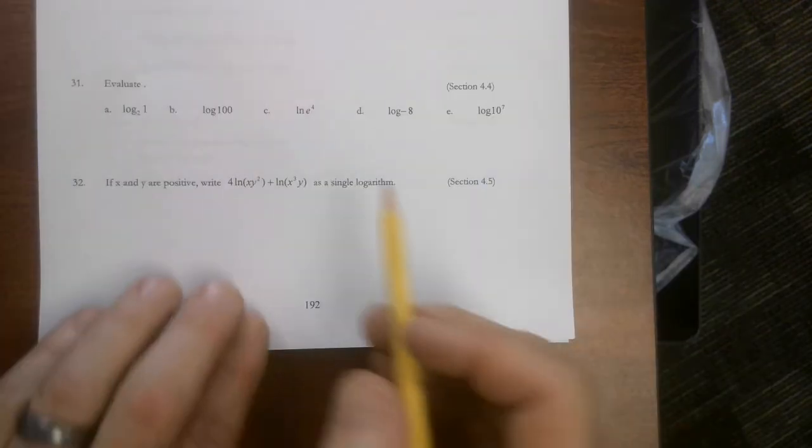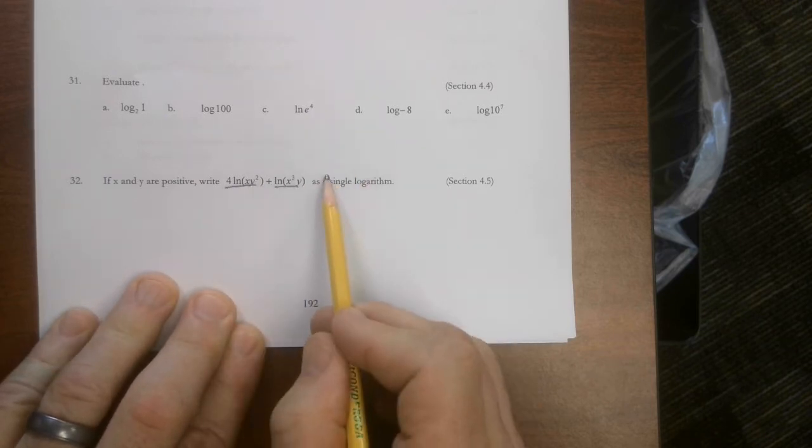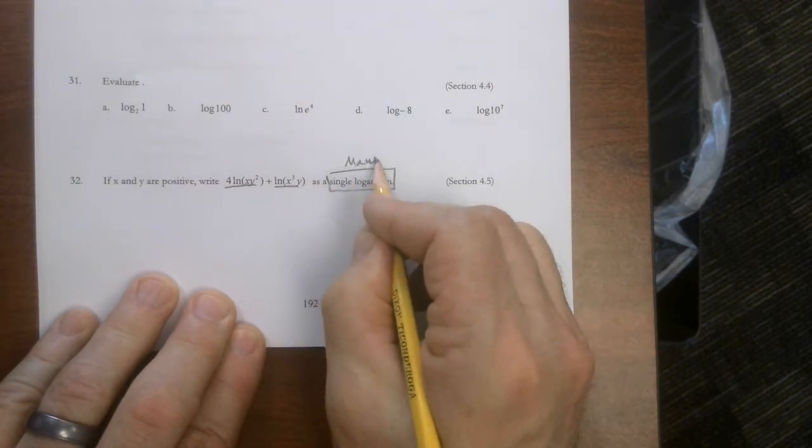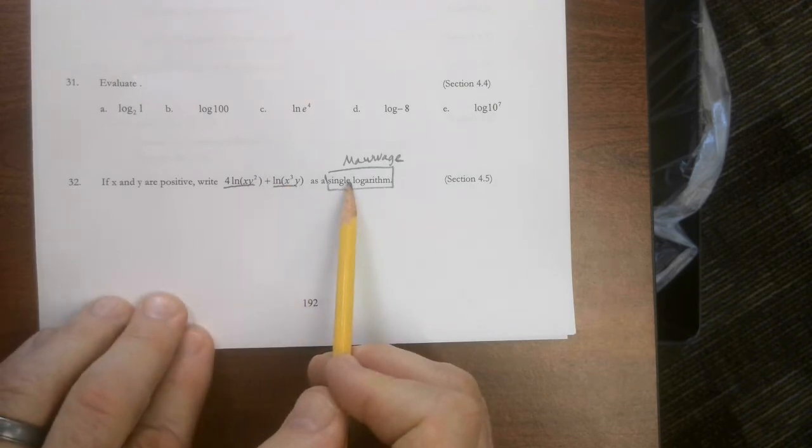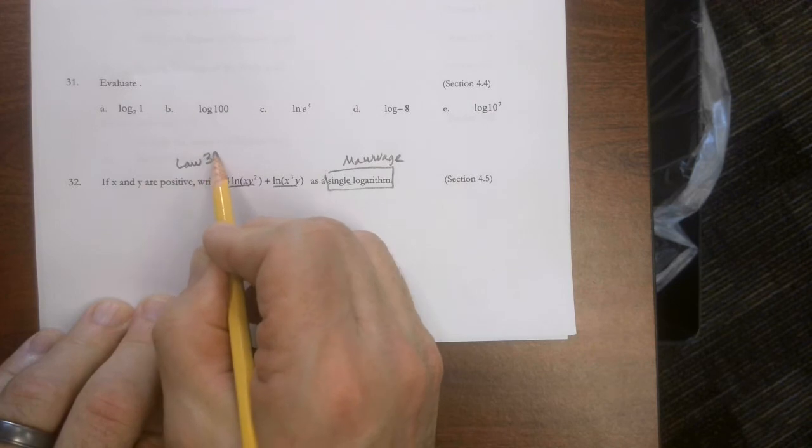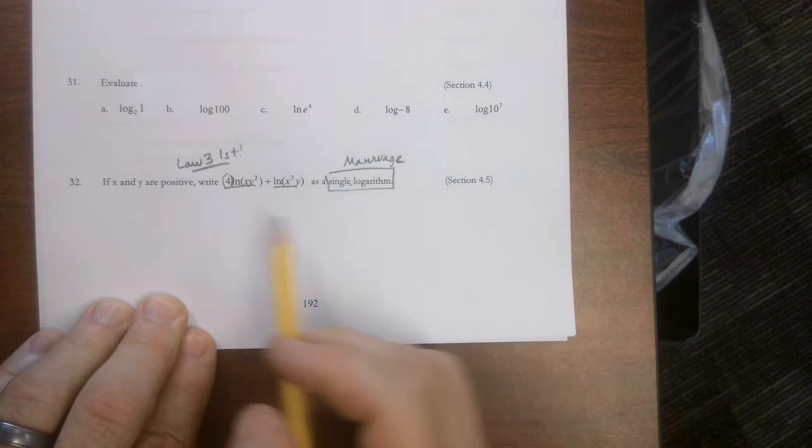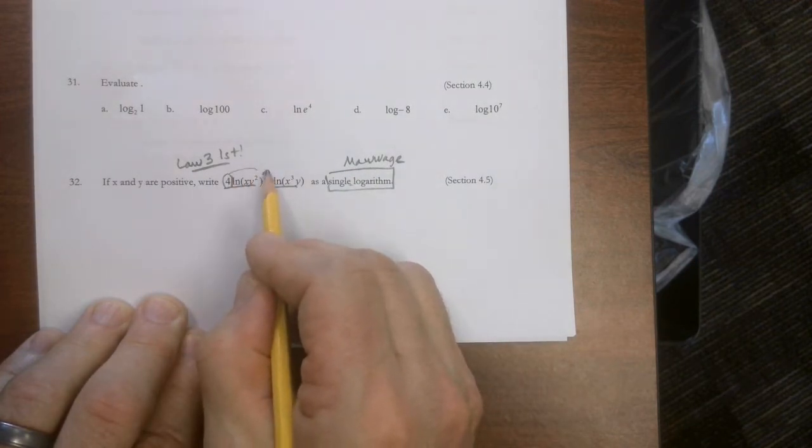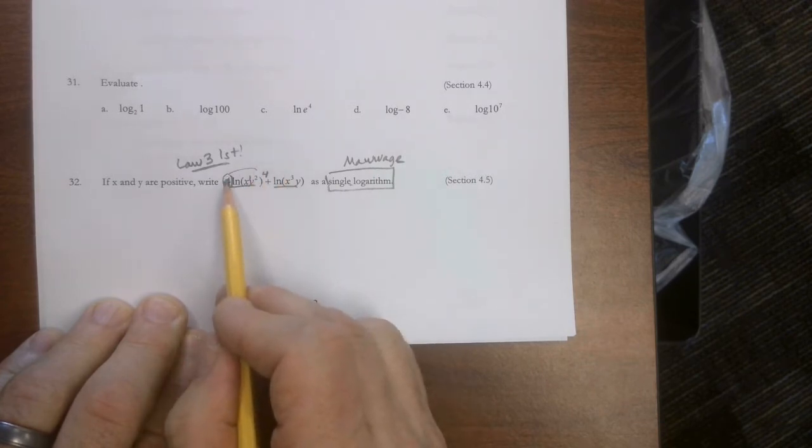Okay, here's number 32. This is saying take these two logs and write them as a single log. This is what I called mawage. In other words, the two shall become one. What are the rules? Well, what I said was look out for law three first. Law three is right here. Anything in front of a logarithm, you can put up here as an exponent.